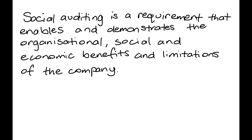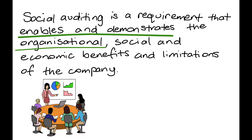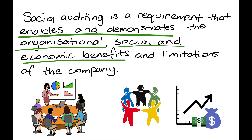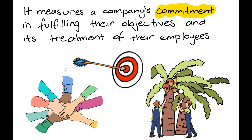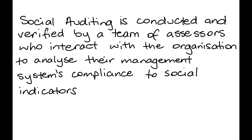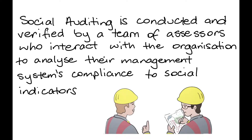Social auditing is a requirement that enables and demonstrates the organisational, social and economic benefits and limitations of the company. It measures a company's commitment in fulfilling their objectives and its treatment of their employees. Social auditing is conducted and verified by a team of assessors who interact with the organisation to analyse their management system's compliance to social indicators.